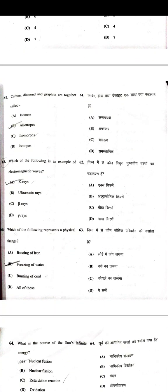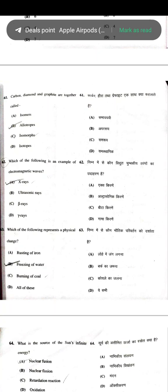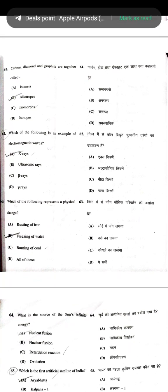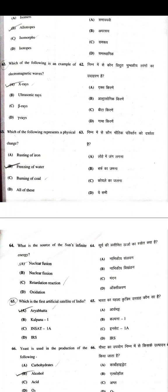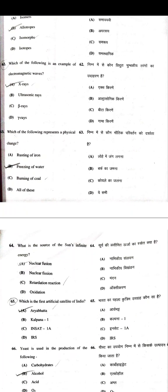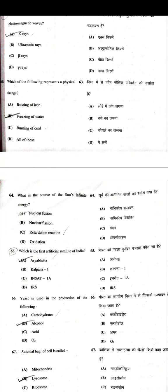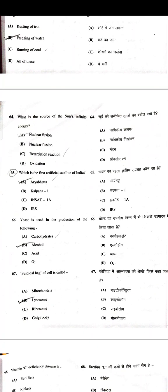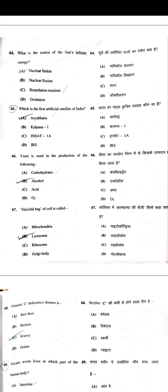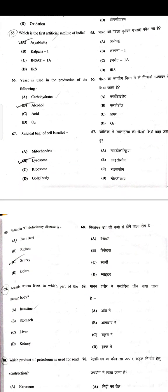Carbon, diamond, and graphite are together called allotropes. Which of the following is an example of electromagnetic waves — X-rays. Which of the following represents a physical change — Freezing of water. What is the source of the sun's infinite energy — Nuclear fusion. Which is the first artificial satellite of India — Aryabhata.